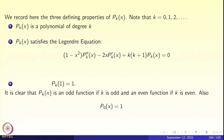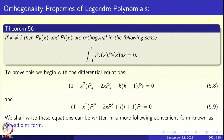So for k equal to 0, 1, 2, 3, etc., we get a sequence of Legendre polynomials p_0(x), p_1(x), p_2(x), p_3(x), and so on. Let us understand the nature of this sequence. The first thing I want to tell you is that it is an orthogonal system in L2 of minus 1 to 1. Look at the inner product.